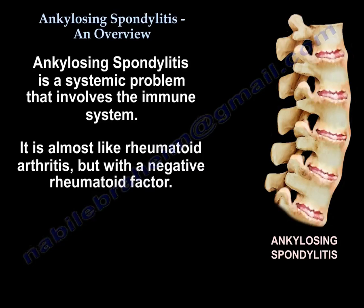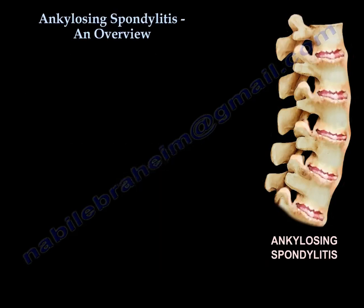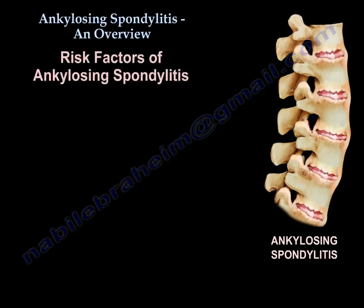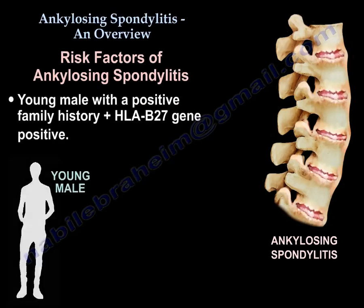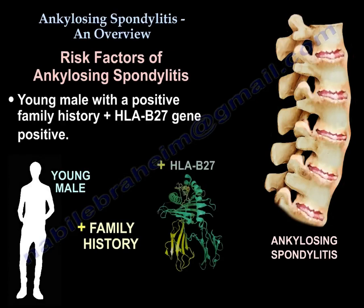Ankylosing spondylitis is a systemic problem that involves the immune system. It is almost like rheumatoid arthritis but with a negative rheumatoid factor. The risk factors are young males with a positive family history and a positive HLA-B27 gene.